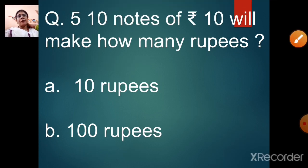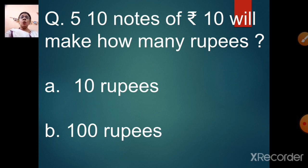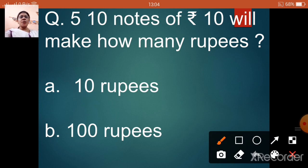Question number 5: 10 notes of rupees 10 will make how many rupees? Let us count — 1 note is 10, 2 notes 20, 3 notes 30, 4 notes 40, 5 notes 50, 6 notes 60, 7 notes 70, 8 notes 80, 9 notes 90, 10 notes will make option B, 100 rupees.